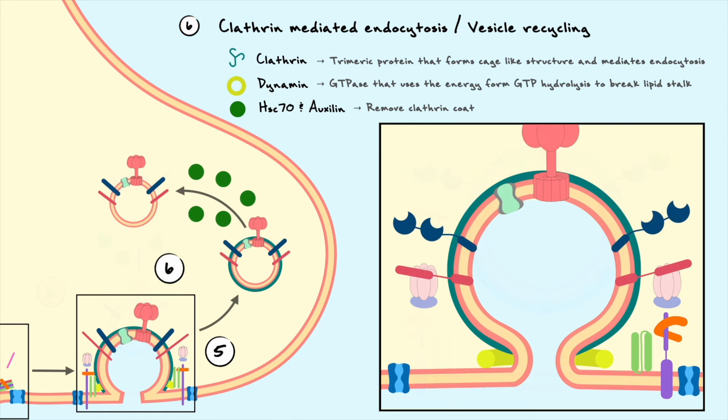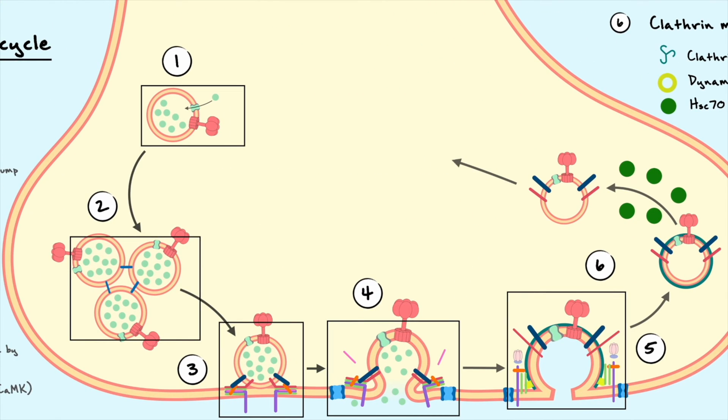From there, the free vesicle can either directly get refilled and restart the cycle or it can join the endosome. From the endosome, a new vesicle can form and get filled with transmitters and restart the cycle from there.